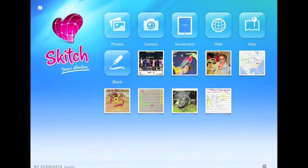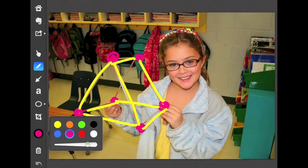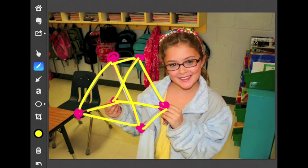Another feature that we could use is within math. Here's a picture I took of a student holding a three-dimensional shape that she had made with straws and twist ties. She was then able to go back and draw in the vertices and the edges so that she could easily identify those. Students could take pictures of various shapes within their classroom and use the Skitch tool to annotate and label the different properties of those shapes.